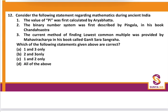Consider the following statements regarding mathematics during ancient India. Statement 1: The value of pi was first calculated by Aryabhad — absolutely wrong, the value of pi was given by Baudhayan. Statement 2: The binary number system was first described by Pingala in his book Chandrasastra — absolutely correct. Statement 3: The current method of finding lowest common multiple was provided by Mahavir Charya in his book Ganit Saad Sangre — correct. So statements 2 and 3 are correct, making option B the answer.